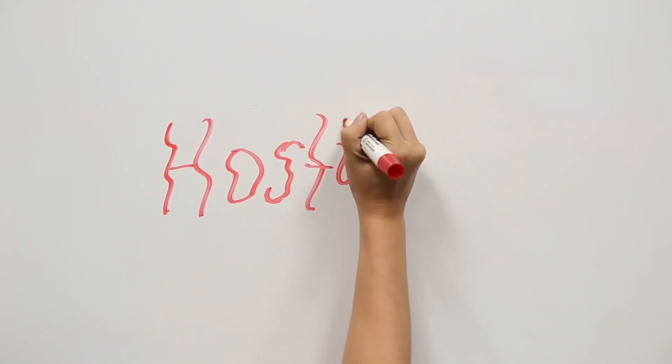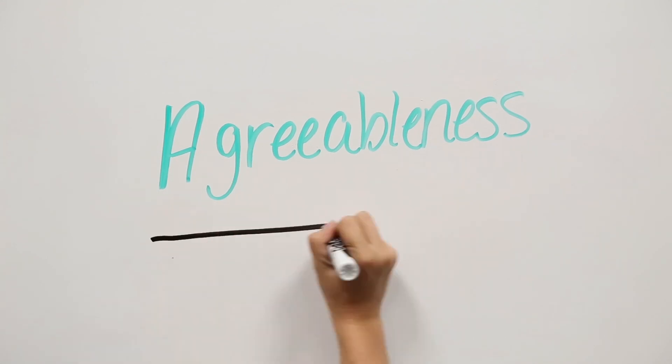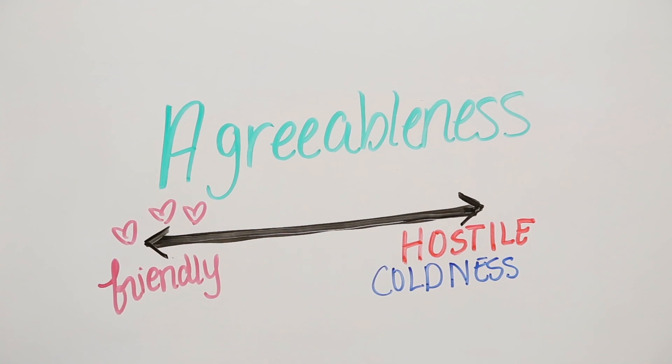Hostility is an entirely different dimension of the human personality that is separate from the introversion-extroversion dimension. This dimension is called agreeableness. On one end, you have a friendly person. And on the other, coldness or hostility.